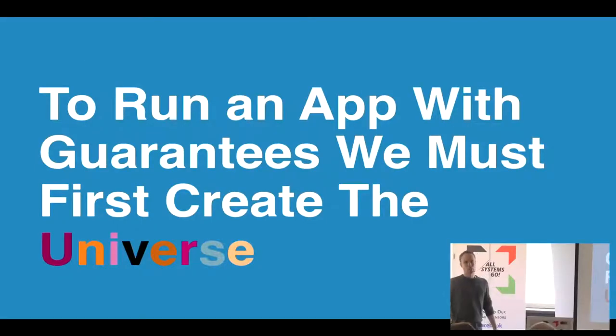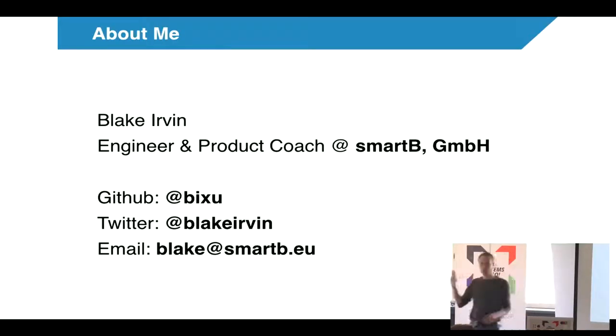My talk today is called To Run an App with Guarantees, We Must First Create the Universe. My name is Blake Irvin. I'm an engineer slash product coach at a company in Berlin called SmartBee, which is a sustainability company. That's my contact details. I'll post them again at the end. I was hoping to do more hallway track stuff today, but I have a sick dog at home, so I have to do my talk and run home. Hopefully my flat's not destroyed.